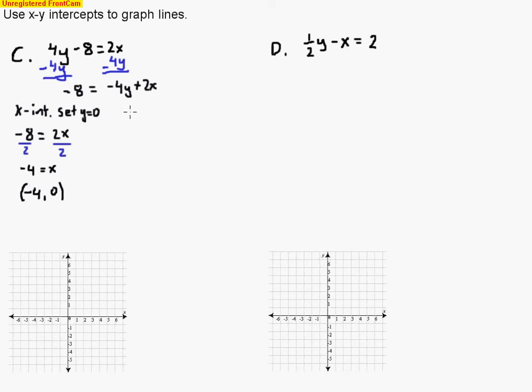So now we're ready to solve for that y-intercept. Remember, the y-intercept is when we're going to set x equal to 0. So when I set x equal to 0, this term cancels out, and I can cross that off. You'll see how I'm only left with that negative 4y equals negative 8, because again, that x term cancelled out.